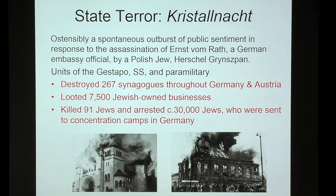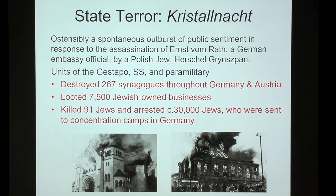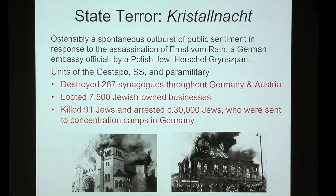Why did it happen? Ostensibly it was retaliation for the murder by a Polish Jew named Herschel Grynszpan of a German embassy official named Ernst vom Rath. Goebbels and Hitler framed it as public outrage — 'we didn't cause this.' When it was carried out, it involved not only units of the Gestapo, the SS, and the paramilitary, but also public servants like police and firefighters who either contributed or did not stop it. The only time they intervened in fires was when Aryan property would be burned.